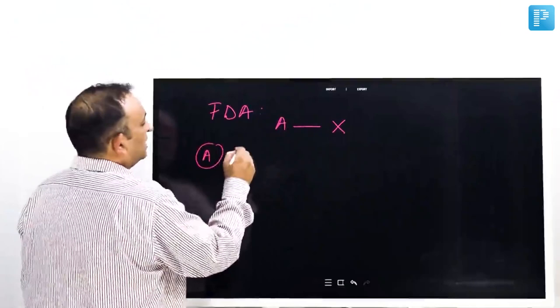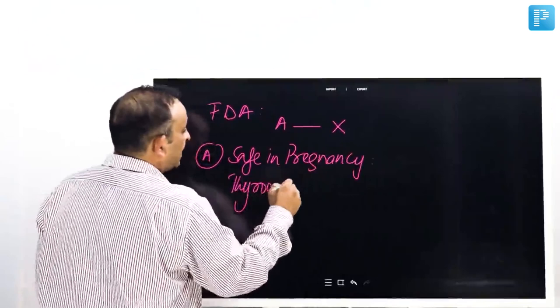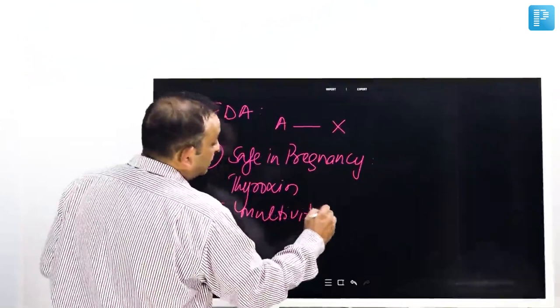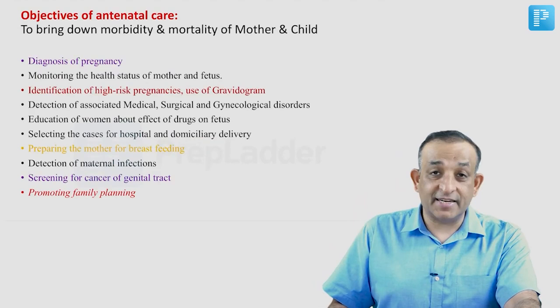Category A drugs are safe in pregnancy. These are drugs which are safely given like thyroxine, multivitamins, and folic acid. In therapeutic doses, if these drugs are given they have no problems whatsoever. These are the safe drugs in pregnancy.